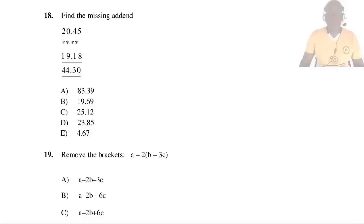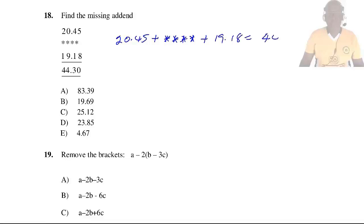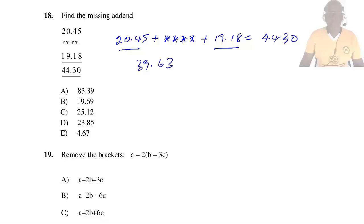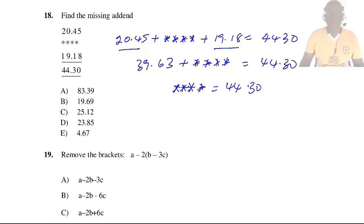Question 18: Find the missing addend. 20.45 + *** + *** + 19.1 should equal 44.30. Adding the known values gives 39.55, so the missing value is 4.75. The answer is A.